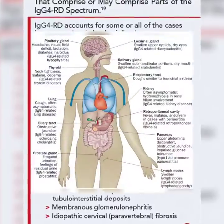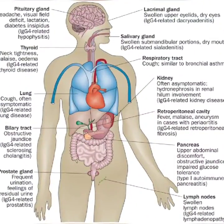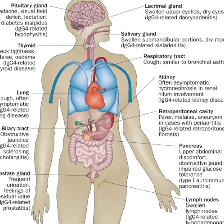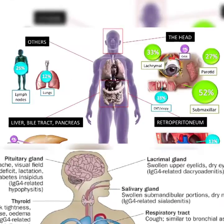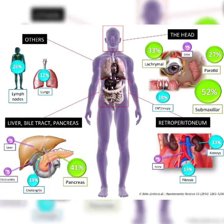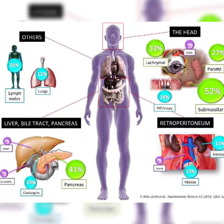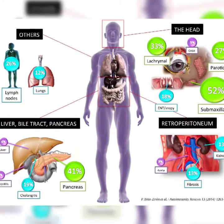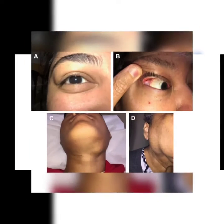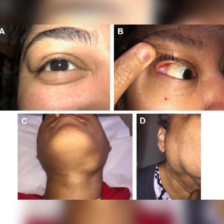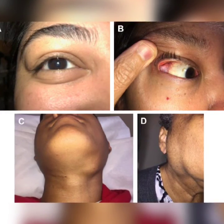Manifestations of IgG4-related disease include: salivary gland involvement causing IgG4-related sialadenitis, previously known as Mikulicz's disease; IgG4-related hypophysitis in the pituitary gland; IgG4-related pancreatitis known as autoimmune pancreatitis; IgG4-related retroperitoneal fibrosis, previously known as Albarran-Ormond syndrome; IgG4-related tubulointerstitial nephritis; and IgG4-related thyroid disease, previously known as Riedel's thyroiditis.